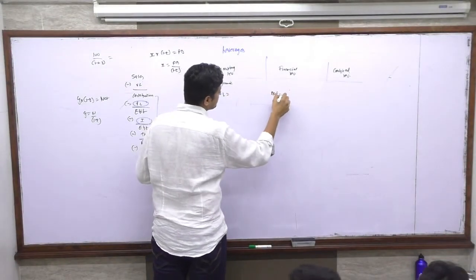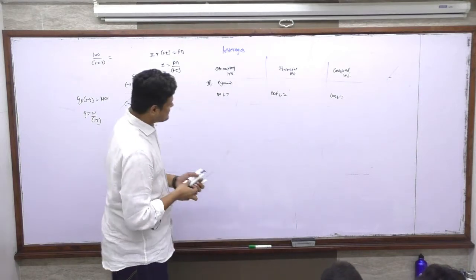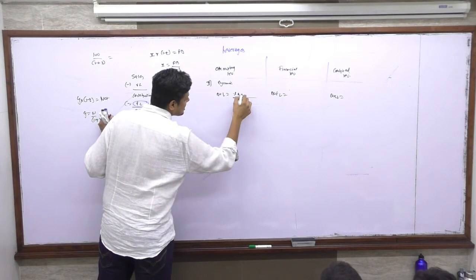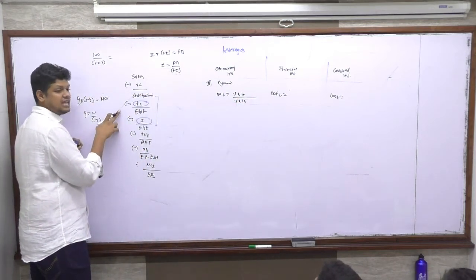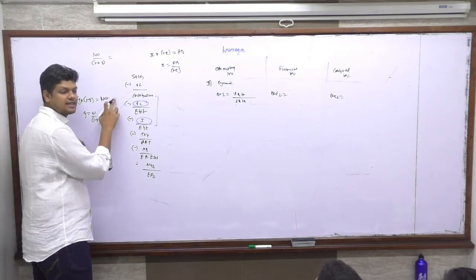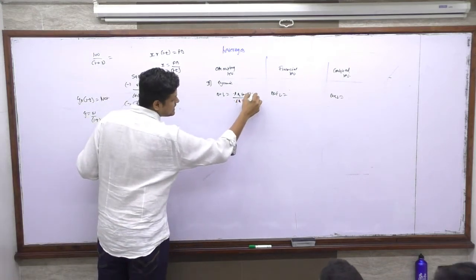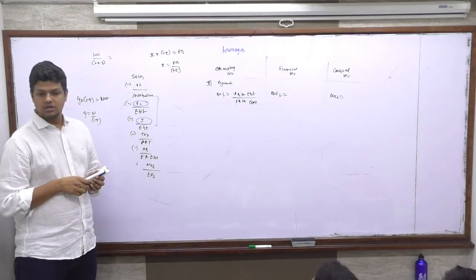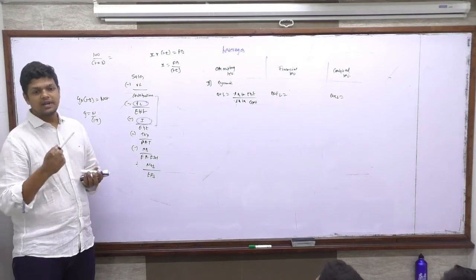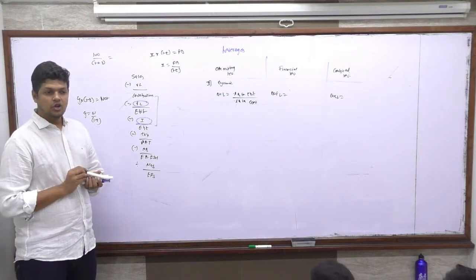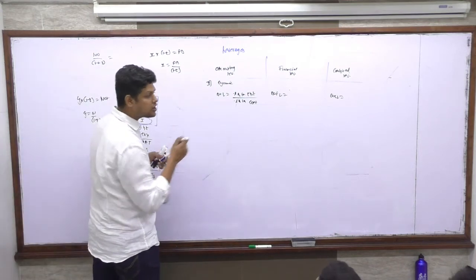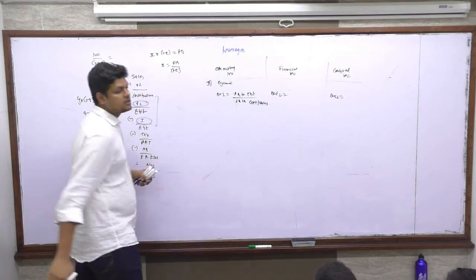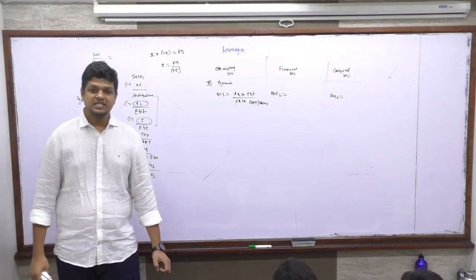What causes a change in operating leverage? Fixed cost. So we find percentage change in EBIT divided by percentage change in contribution. Since contribution comes from sales less variable cost, if sales changes by 20%, variable cost also changes by 20%, and contribution changes by the same proportion. So the formula is: percentage change in EBIT upon percentage change in contribution or sales — they may give us either one.